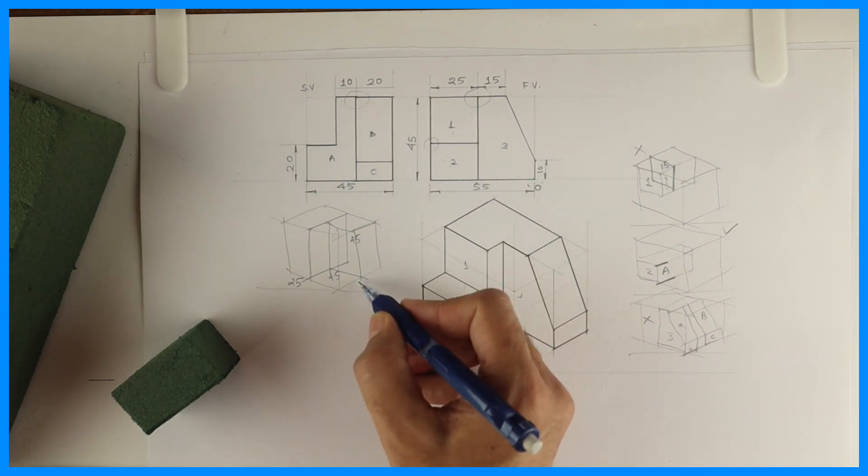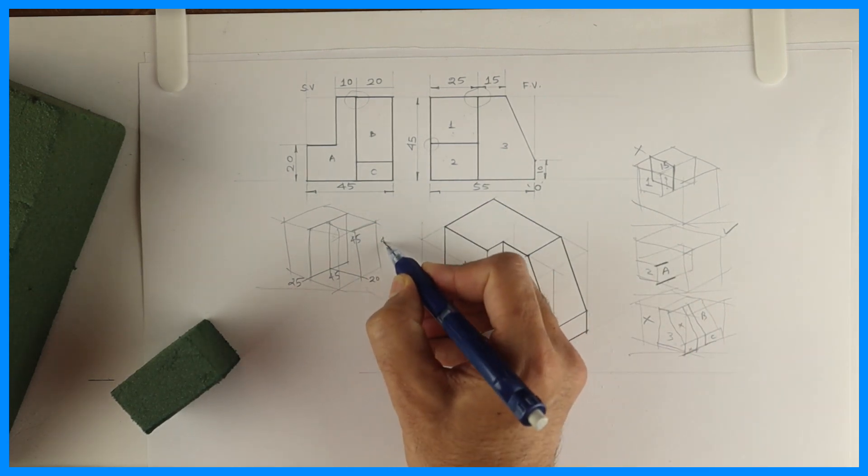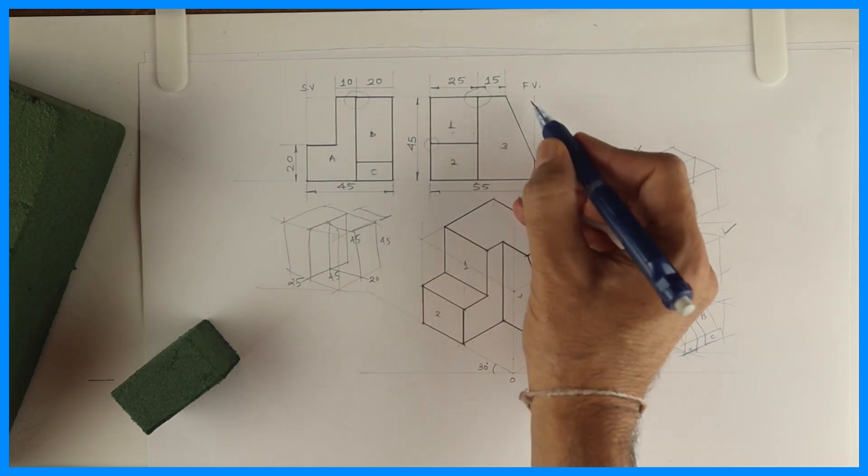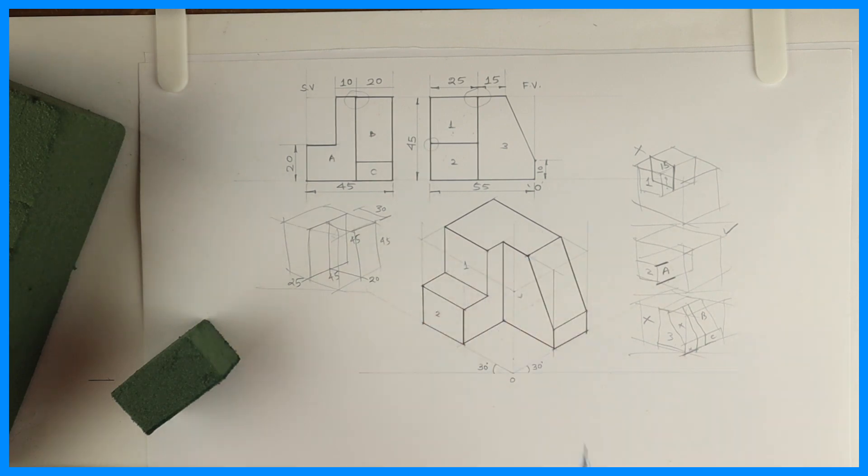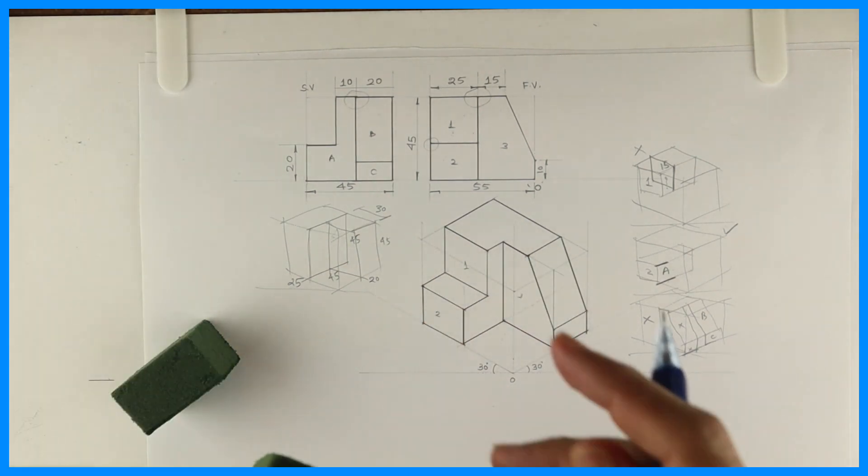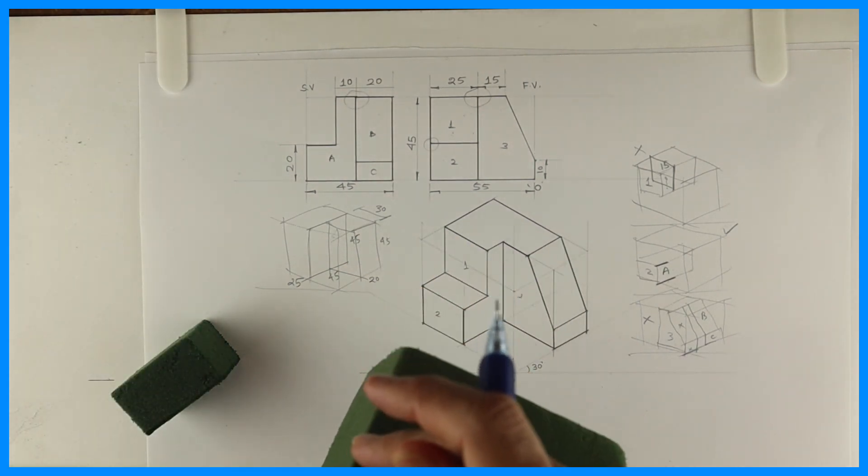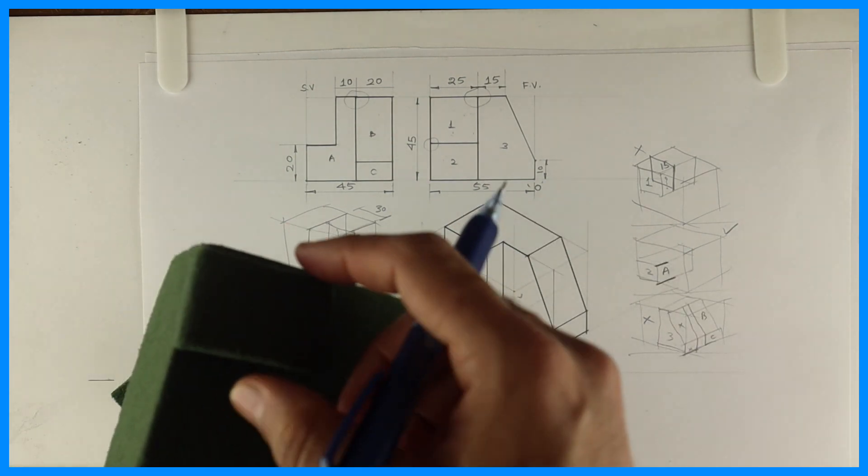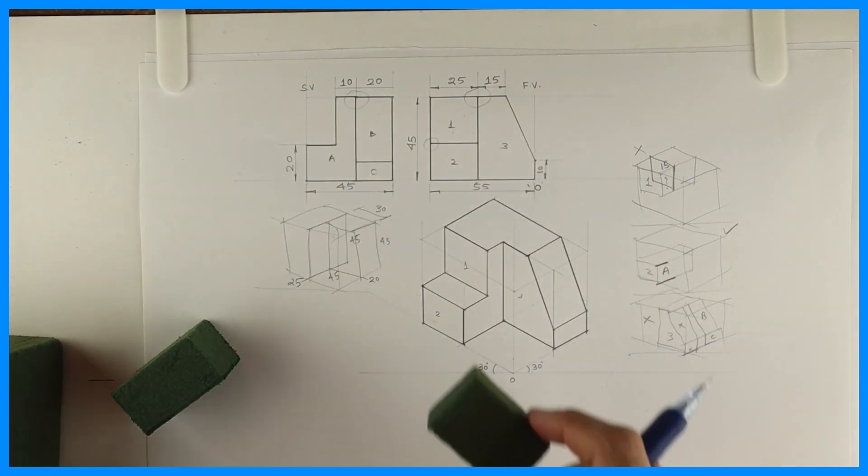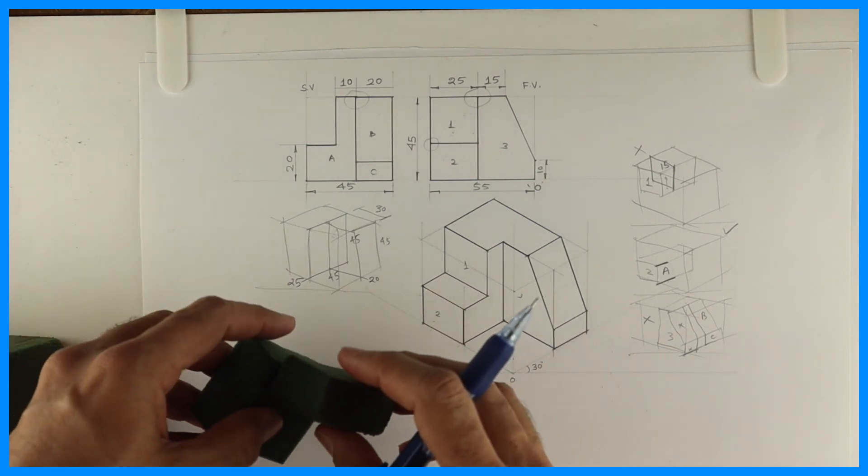Second piece is this, 20. Height is 45, and this is 55 minus 25, 30. So again we'll take a dimension that way, 45 by 30 and 20. See this. So we'll get two pieces like this.